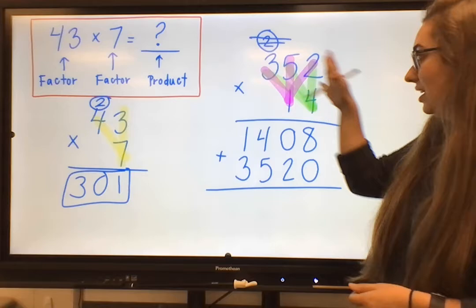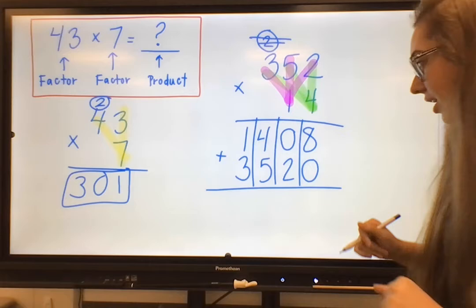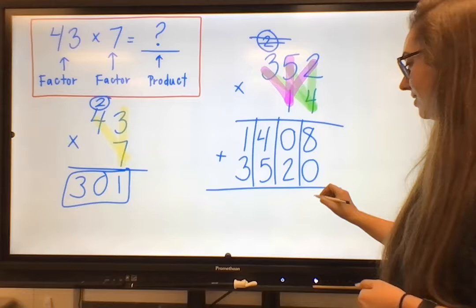So we put an addition symbol here. Draw ourselves a line so that we can go ahead and solve. Sometimes when you get into some big numbers, it can be a little tricky to keep your place values in check. So if you ever want to draw lines right there to help you make sure everything's straight and you don't get a little wonky as you're adding, that can help as well.